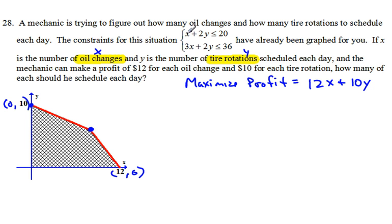That vertex is the intersection of these two lines right here. I have a couple options. I could pull out my calculator and do it using matrices, and that will get to me fairly quickly. But I do notice they both have 2Y, and this is going to be pretty easy to just do by elimination. So I'm going to do that real quick.